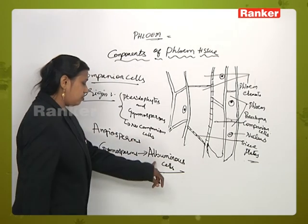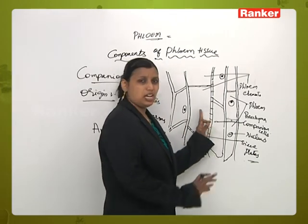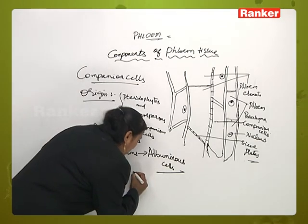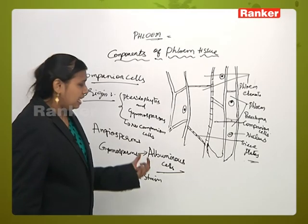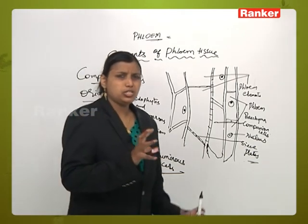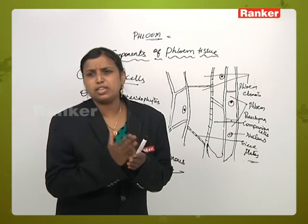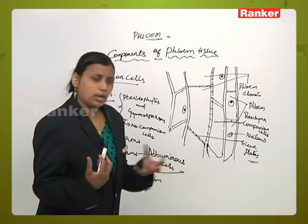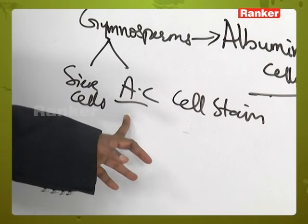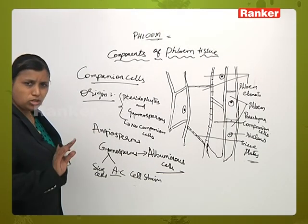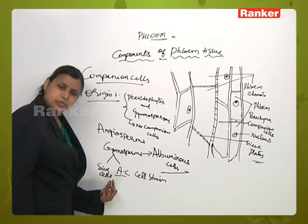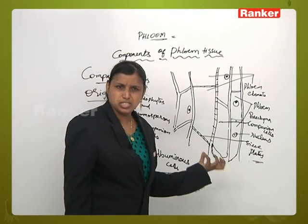How do we recognize albuminous cells? Companion cells are associated with sieve elements and connected to them. Albuminous cells can be identified by the presence of cell stains — if in a microscopic view the cells are stained, those cells are called albuminous cells. In gymnosperms, the albuminous cells and sieve cells will not show origin from the same meristematic cell, whereas companion cells originate from the same mother cell along with the sieve tubes.